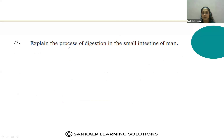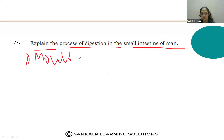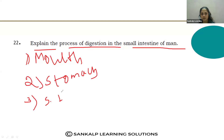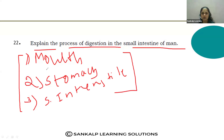Question 22: Explain the process of digestion in the small intestine. This is a very important question already discussed. My dear students, digestion in the mouth, stomach, and small intestine are all very important. There is no special digestion in the large intestine — it only helps in absorption of water. Make a note covering mouth, stomach, and small intestine digestion.